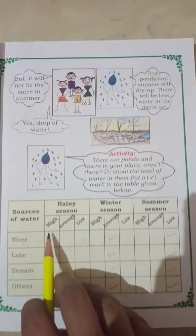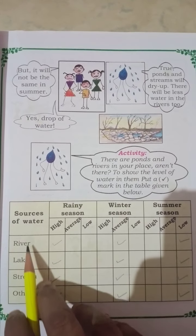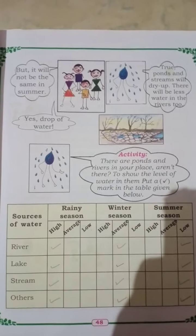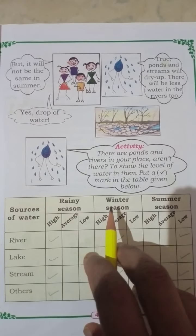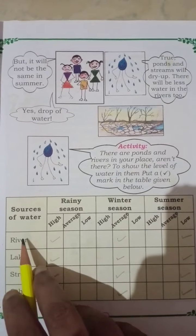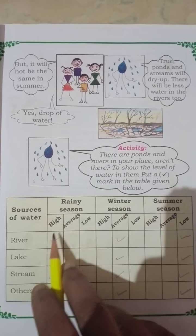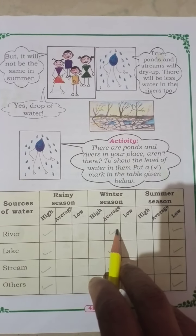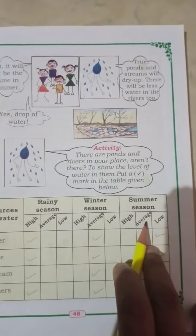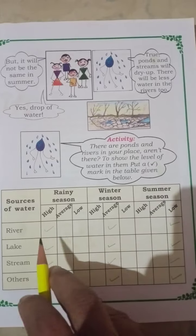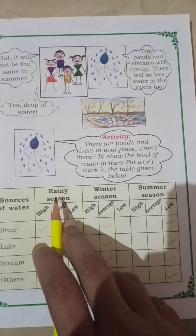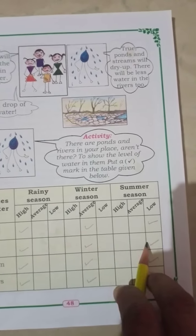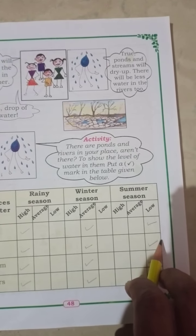Let's look at the water level. Mark the level of water in the rainy season. In the river, the water level is high in rainy season. In a lake also, in rainy season the water level will be high, in winter season it will be average, and in summer season the water level will be very low.